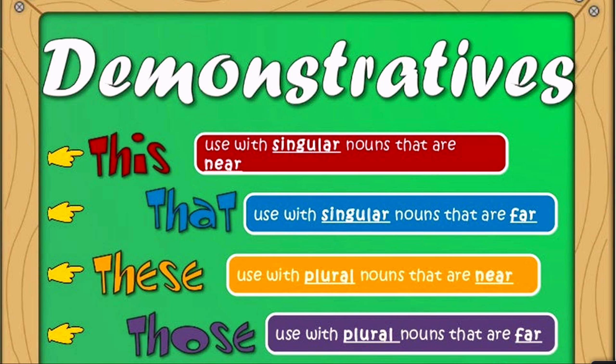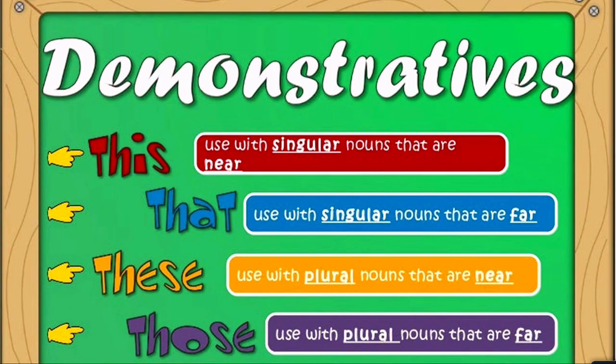Moving on, we have demonstratives. We began the session with demonstratives — talking about a pen which is nearby and a car which is far. Demonstratives tell us about the location of the object and whether the noun is singular or plural. For example, 'this is a ball' — it is singular and close to us, so we use 'this.' 'That is a ball' — it is at a distance, so we use 'that.' 'This' and 'that' are used with singular nouns that are near and far respectively.